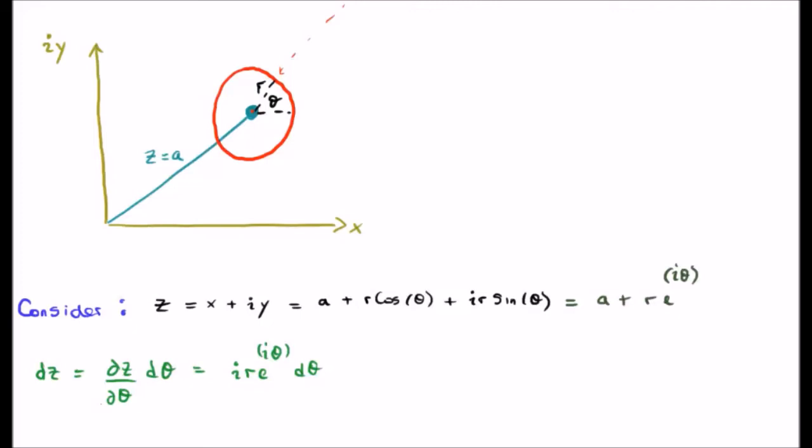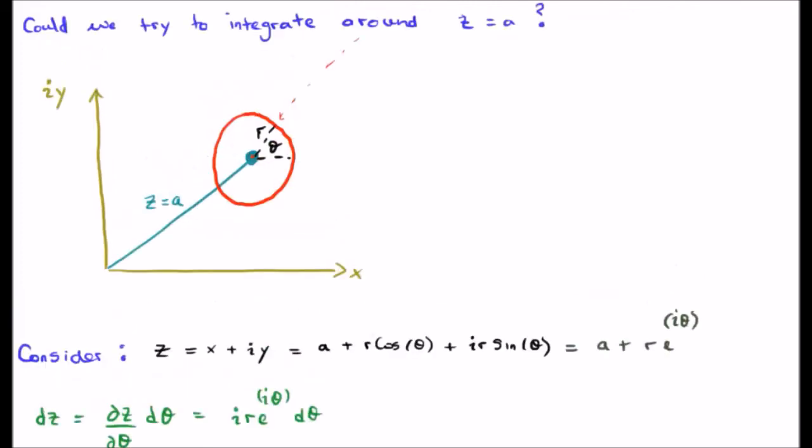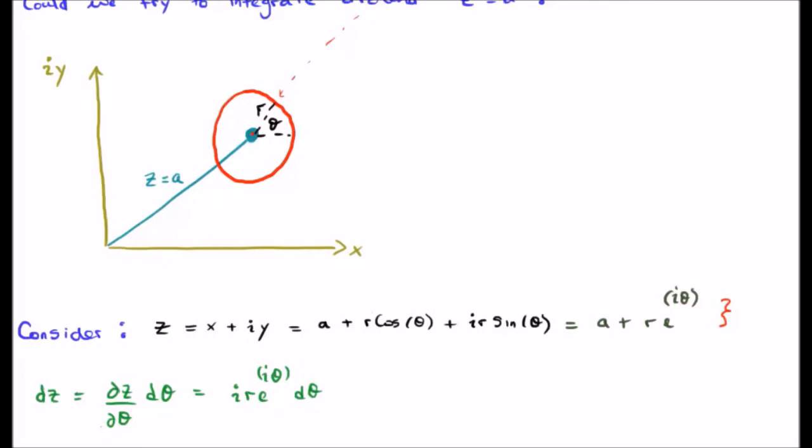We know, of course, that z equals x plus i times y. Therefore, in order for us to do our path integral, we're going to invoke Euler's equation and rewrite z as a plus r times e to the i theta. We can use our familiar theorem from partial differential equations and say that dz is del z del theta d theta and calculate dz.